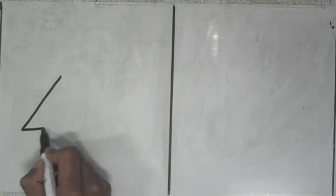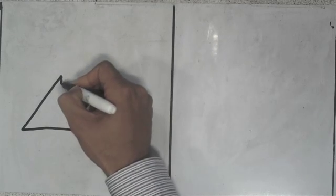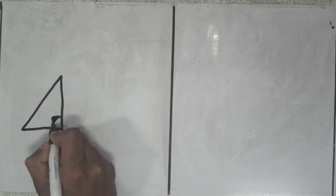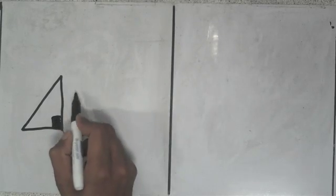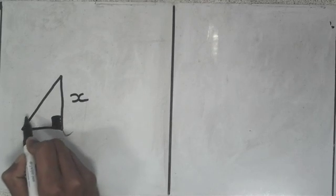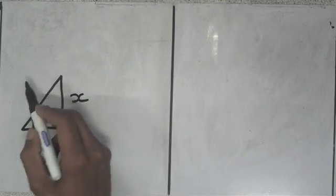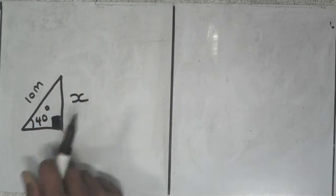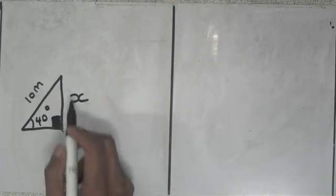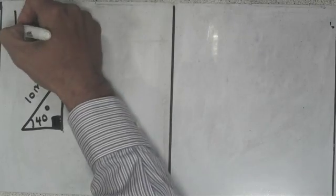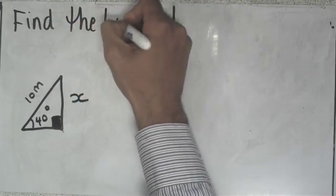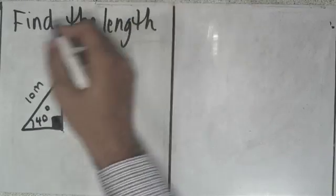On this question, I've got a triangle, and it's a right angle triangle, so the right angle is here. This side here is x, this angle here is 40 degrees, and that side is 10 meters. The question is asking me to calculate the length x, so we need to find the length x.